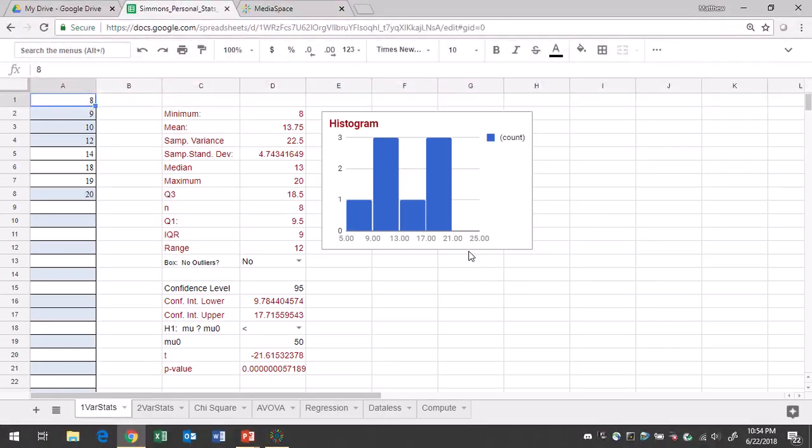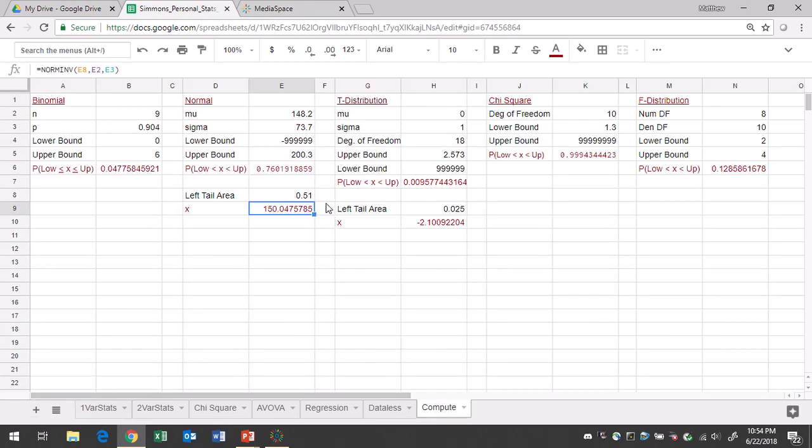Once you get to Google Sheets, you will want to go to the Compute tab to the normal area. Type in a mean of 0, standard deviation of 1. Since you're finding data values, you don't care about lower or upper bound because you're not calculating a probability.